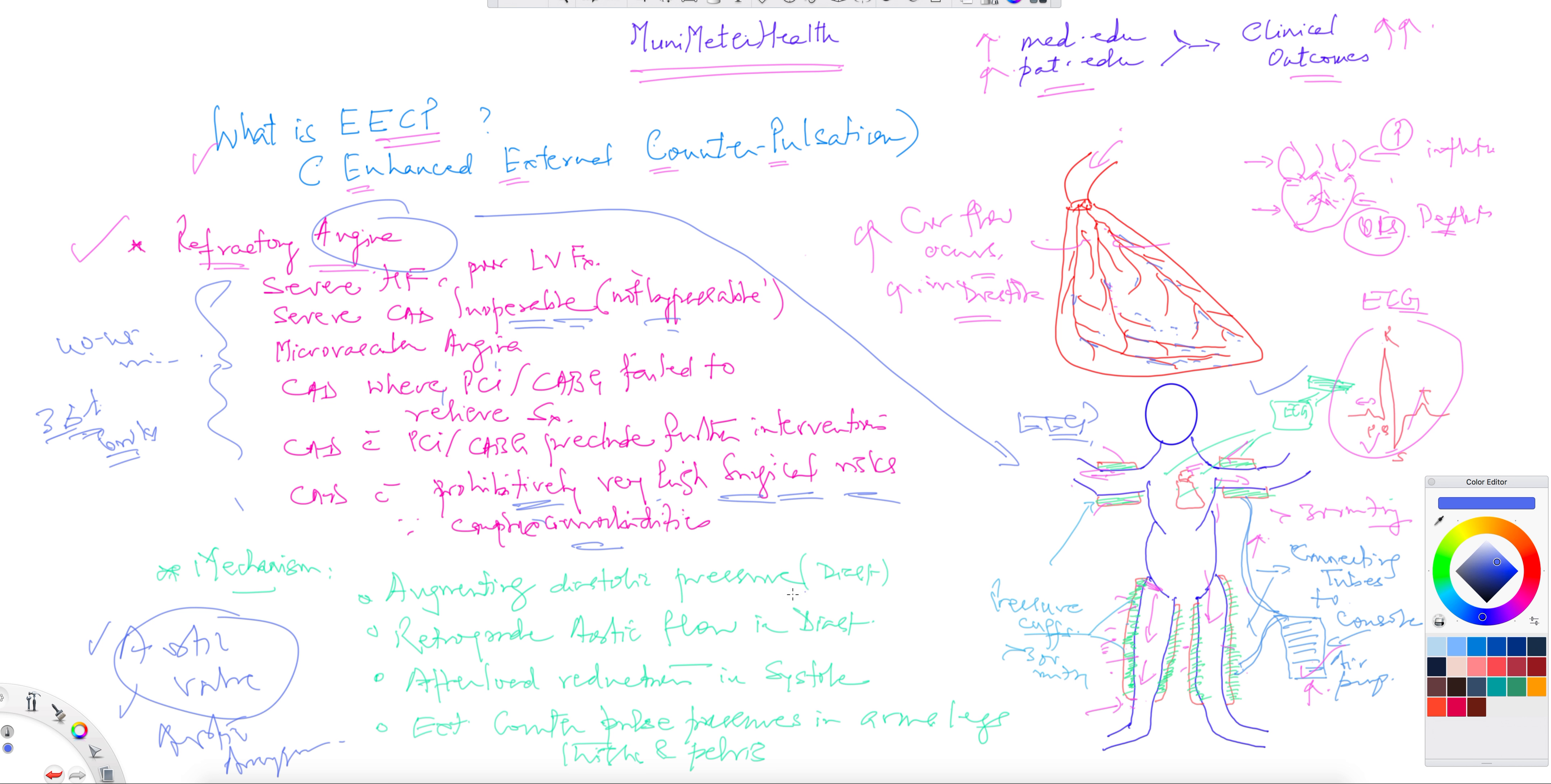The mechanism it works is diastolic pressure is elevated to improve the coronary circulation because coronaries perfuse only during diastole. Retrograde aortic flow in diastole occurs. Afterload reduction in systole occurs because it deflates during the systole. When it deflates during the QRS complex, the aorta will pump out the blood more easily because now the arterial bed is nice and dilated. It will deflate in all four extremities. External counterpulsations in the arms and legs and thighs and pelvis.